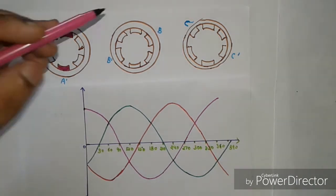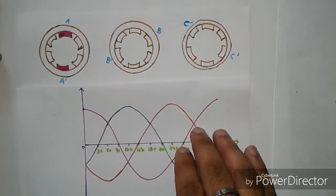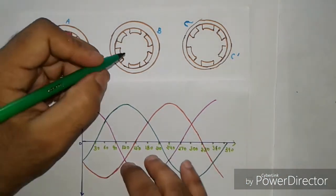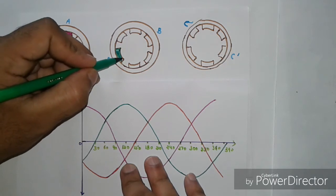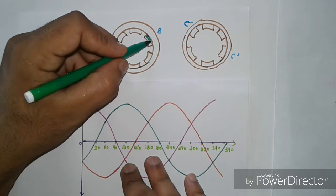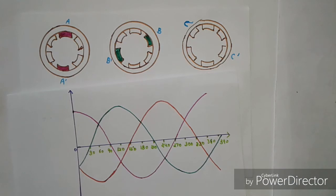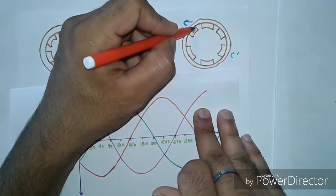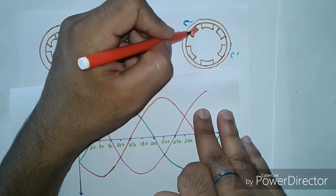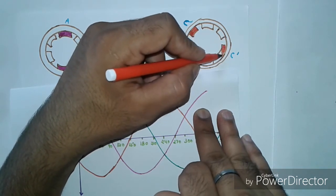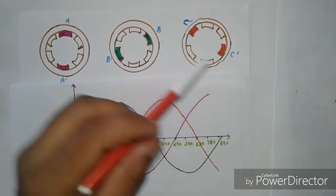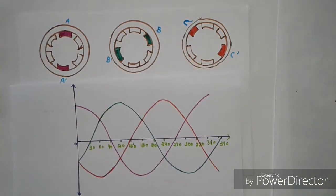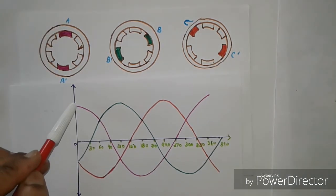Then the next phase is B–B dash, and the supply given to the third phase is C–C dash. As you can see, the angle between these three phases is 120 degrees. At this stage, the waveform of the current is at its maximum value.